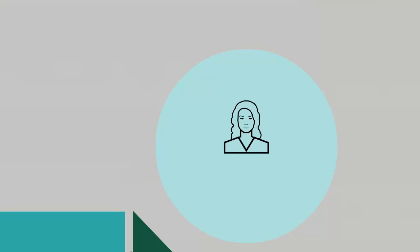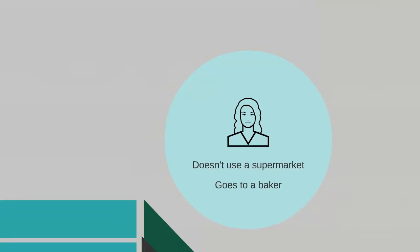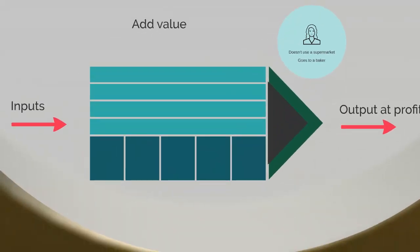So this is Juliet. Juliet doesn't like the supermarket. Whenever she needs bread, she goes to a local baker. The reason she goes to a local baker rather than a supermarket is because she prefers the service and the quality of the product there. She's willing to pay more and go out of her way to buy bread from the baker, even though at the end of the day she comes home with a loaf of bread.